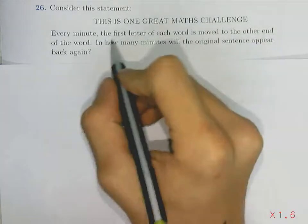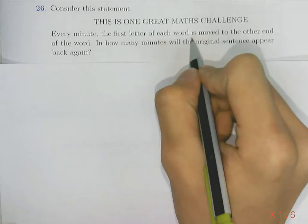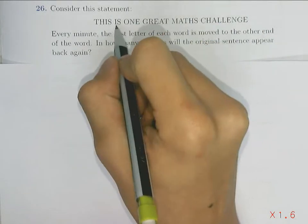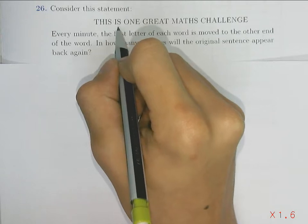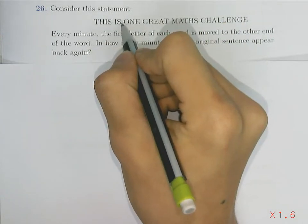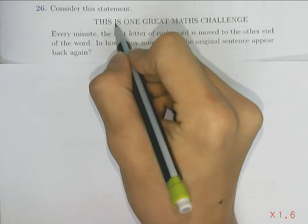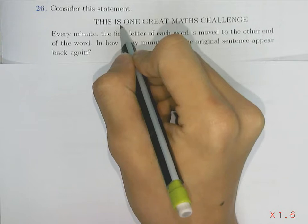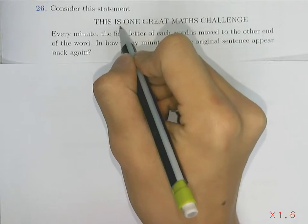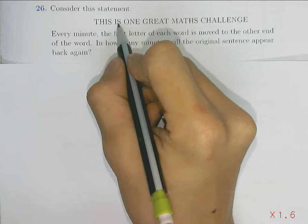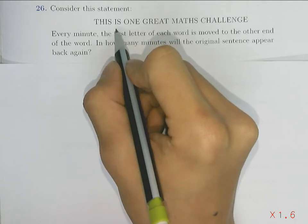Now it's known that every minute the first letter of each word is moved to the other end of the word. So looking at this two letter word 'is' - after one minute this S will be in front so it will be spelled as SI, then another minute it will be IS again. So it only takes every two minutes for this word to appear as IS.